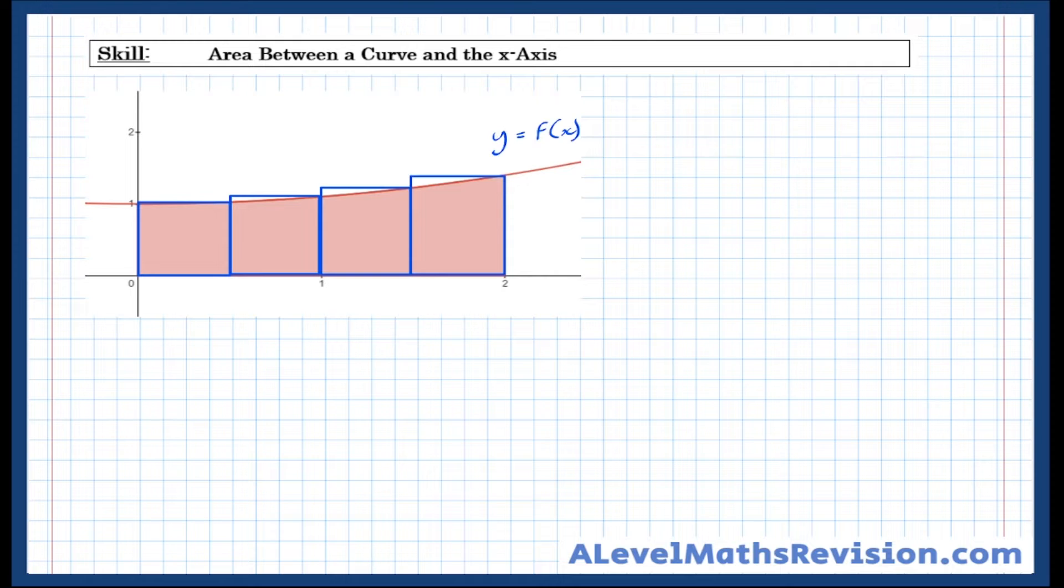And what we could do is keep using more and more rectangles, making that area smaller and smaller. But what actually happens when we use an infinite number of rectangles is that area now becomes exact. It's no longer an estimate. So when the rectangles become infinite in number and infinitely thin, that's when we get a true value for what the area between the curve and the x-axis actually is.